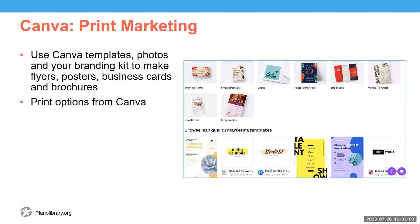Canva is an online tool where you can use templates, photos, and all sorts of other materials to create a variety of content including flyers, posters, business cards, brochures — any sort of print material you might need for your business. There are even printing options through Canva if you need to get something printed, kind of like going to FedEx or Staples, or you can print at home.